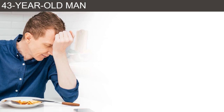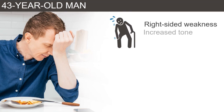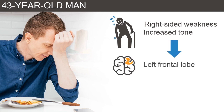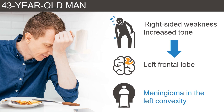Let's return to our patient. The neurologic exam revealed right-sided hemiparesis with increased muscle tone and hyperreflexia. Although these findings are not specific, they suggest a possible left frontal lobe focus. In fact, MRI revealed a meningioma in the left convexity causing mass effect and edema in the left motor cortex.